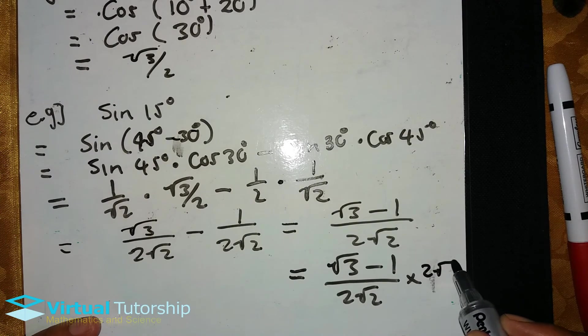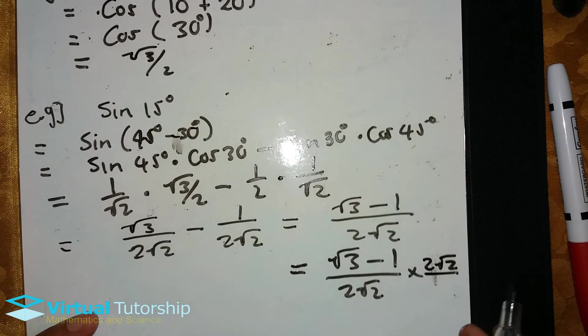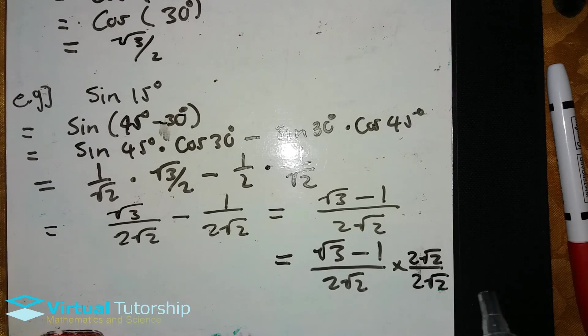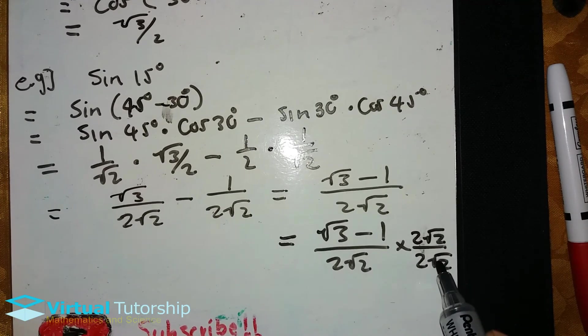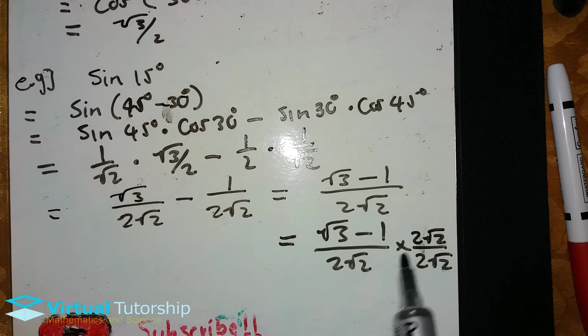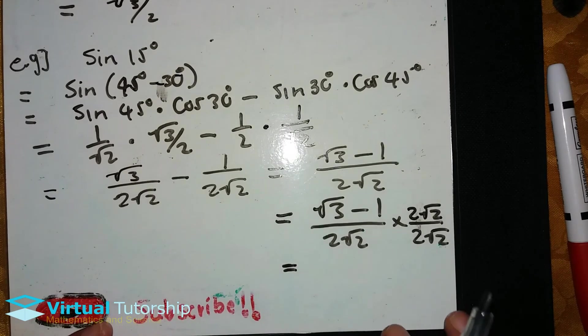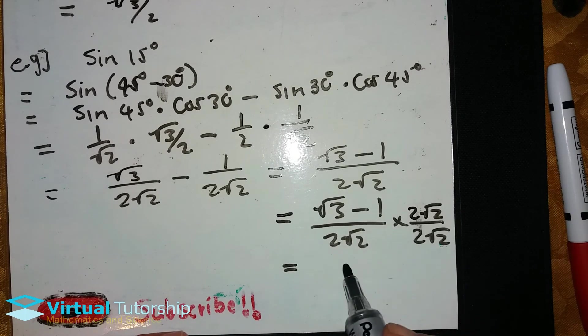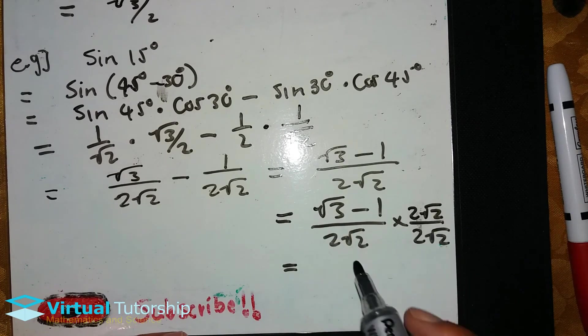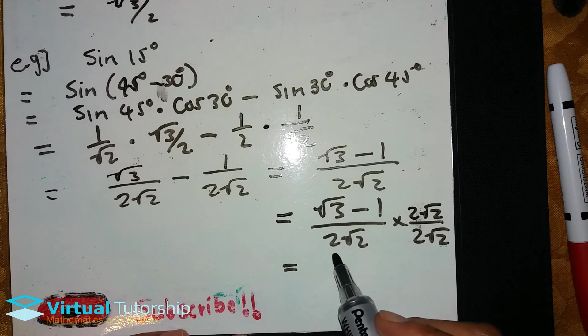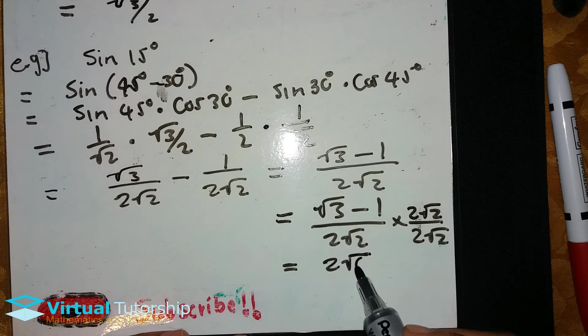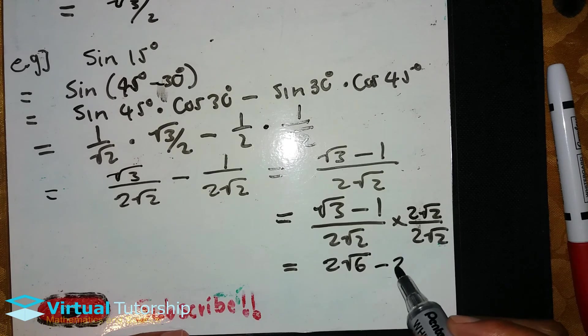So we rationalize the denominator. We multiply by 1, but that 1 we multiply is to rationalize the denominator. This divided by that. The video in the description below explains rationalization. So for this lesson, we need to explain the rationalization of the denominator.